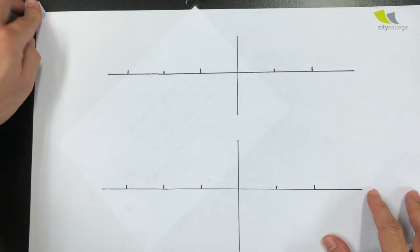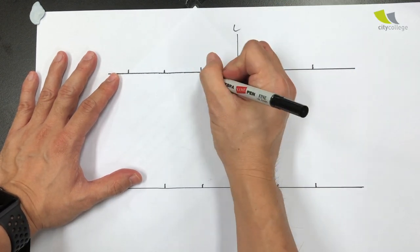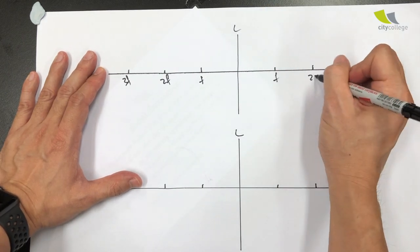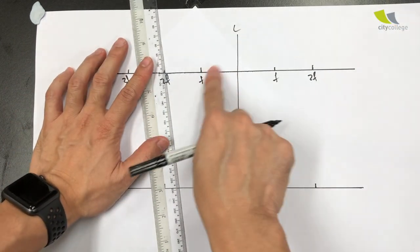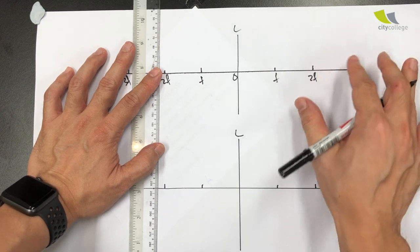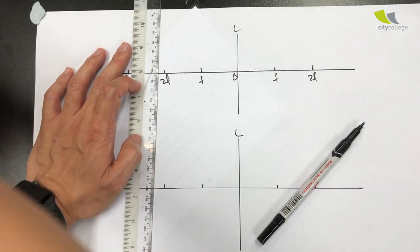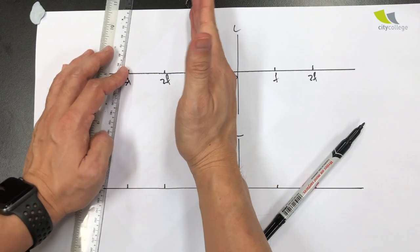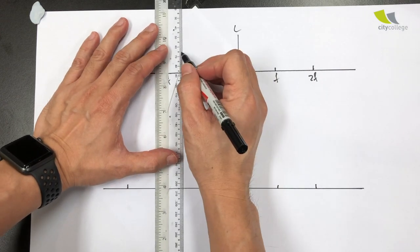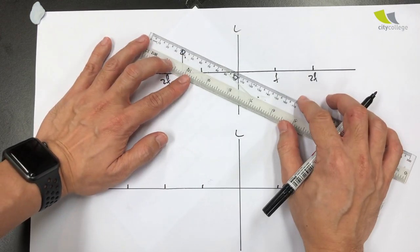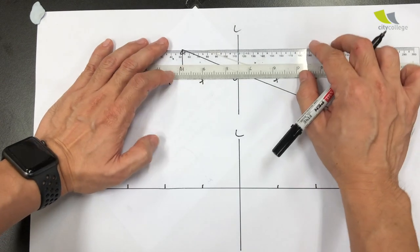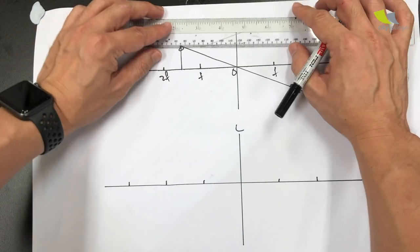This is our ray diagram. We have our lens, then one focal length, two focal length, three focal length away. If your object is less than one focal length away, you won't get any real image—nothing on the screen. It must be from one focal length away. If you have something between one and two focal lengths, draw two lines: the first line cuts across the optical center and doesn't bend; the second line is parallel to the principal axis.